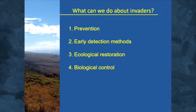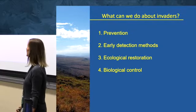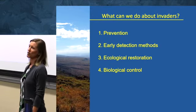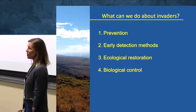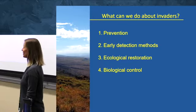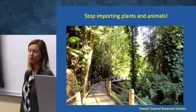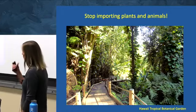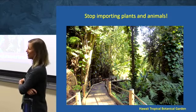What can we do about invaders? The first approach is prevention — we could save ourselves a lot of hassle if we just prevent the movements, either accidental or deliberate, of plants and animals from one part of the world to another. An ounce of prevention is worth a pound of cure: it's much cheaper to prevent invasive species from getting into places in the first place. But a lot of places just don't have restrictions on the importation of plants and animals.